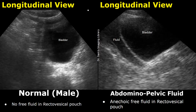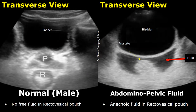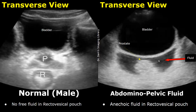These images are taken in the transverse plane. In the normal image, we can see the prostate and the rectum without any fluid surrounding them. But in this image, we see anechoic fluid posterior to the bladder, and the fluid surrounds the prostate.